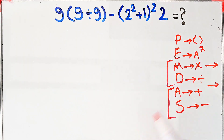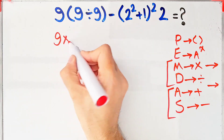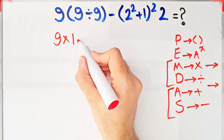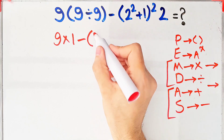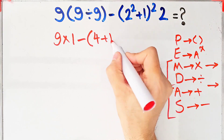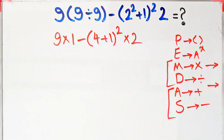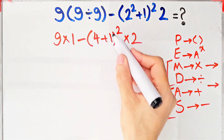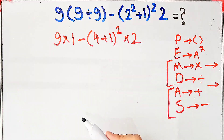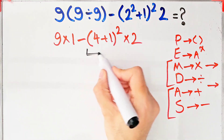First, we simplify the parentheses: nine times nine divided by nine, which equals one. Then minus two to the power of two, which equals four, plus one, then all of them to the power of two, then times two. Now we have multiplication, subtraction, parentheses, addition, and exponent. First we simplify the parentheses: four plus one equals five.